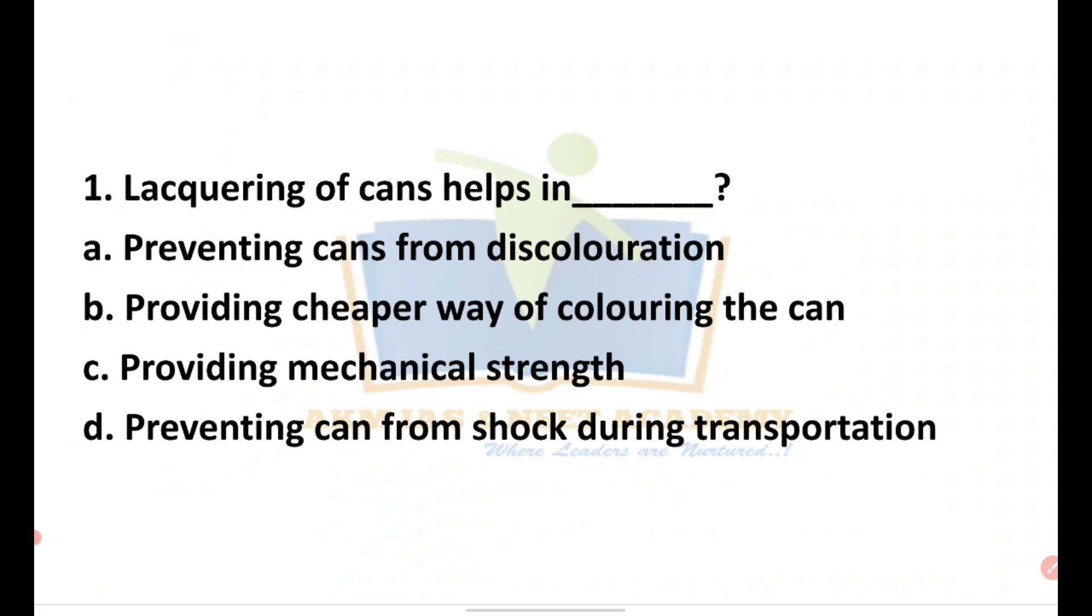What is lacquering of cans? We have three types of packaging materials: rigid materials, semi-rigid materials, and flexible materials. Under rigid materials, we have glass containers and metal containers. When we store food products in metal containers, to avoid food contamination from the metal, we coat them. That coating is the process of lacquering. It helps in preventing cans from discoloration. So the answer is A.